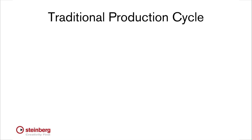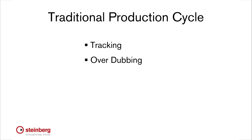The first step is tracking. Tracking is the process of recording individual parts, like the voice or the instrument track that we recorded in a previous video. The second step is normally overdubbing — that's the process of adding additional tracks to your basic recording.